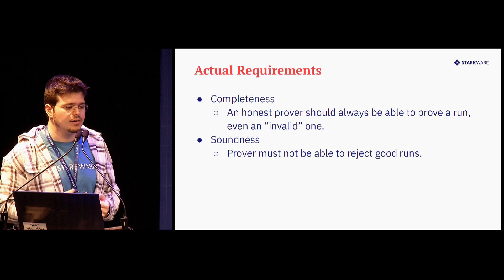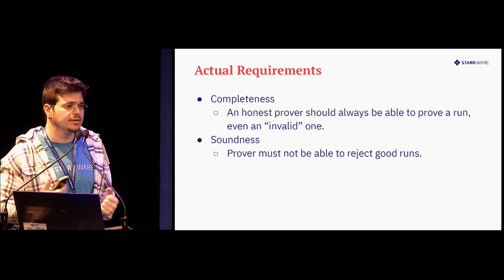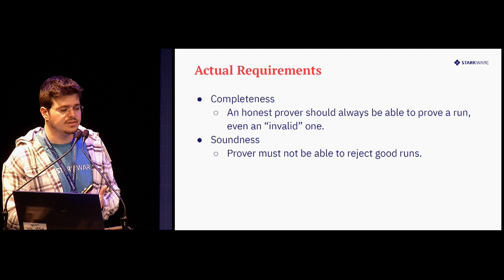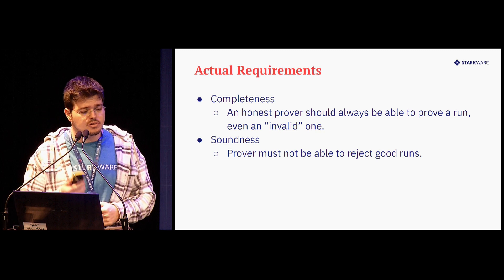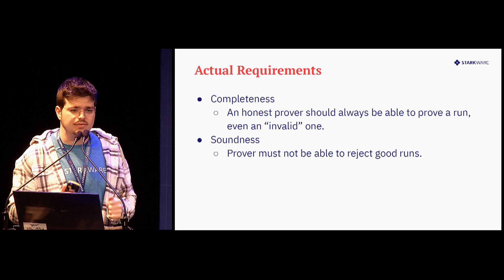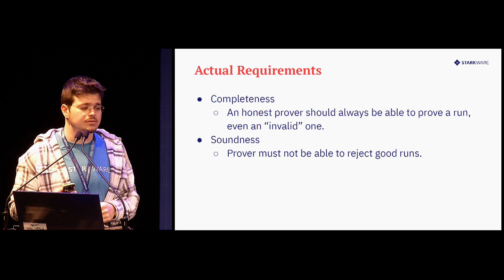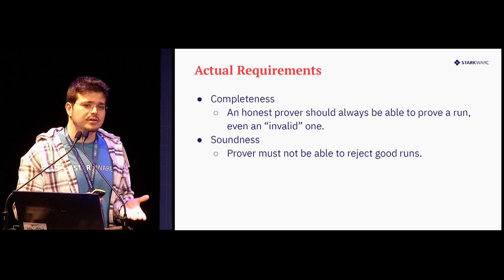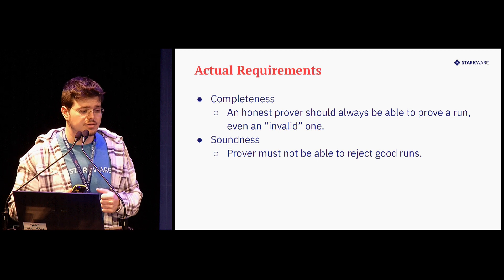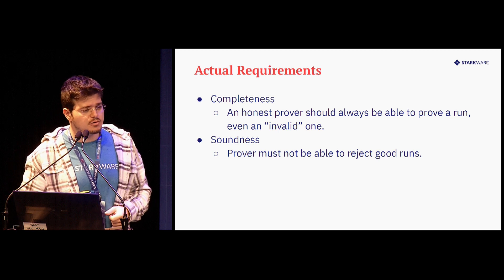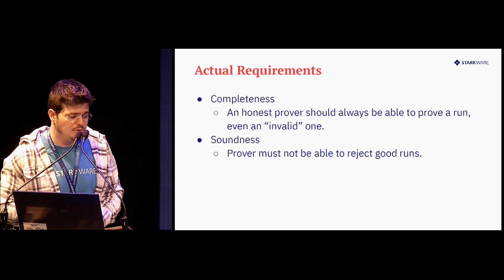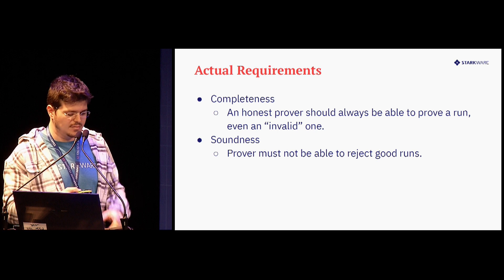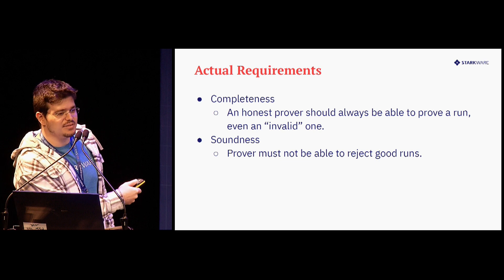So what are actually our requirements from this proof system? The first requirement is completeness: an honest prover should always be able to prove a run — any run, even one that supposedly failed or is invalid — because we want to include invalid runs and collect their fees even if we don't do any state changes. The other requirement is soundness: a prover must not be able to reject good runs.